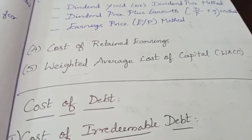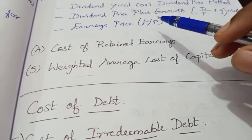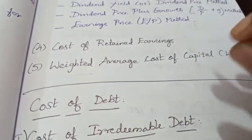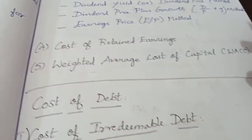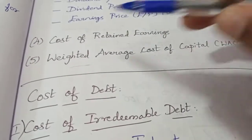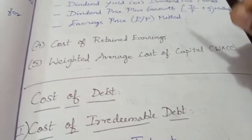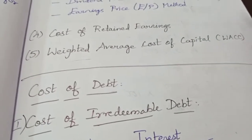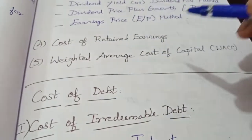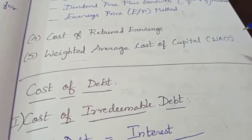Next is weighted average cost of capital. Once we have discussed all components of cost of capital, we use the weighted average cost of capital to combine them — considering the interest, dividend, and cost of capital proportionally. These are the problems we will discuss in the next session and next video.